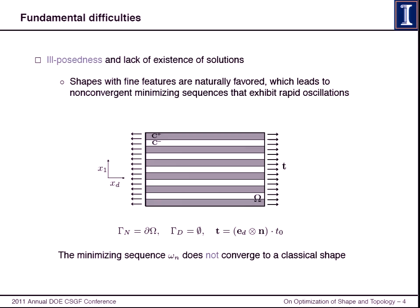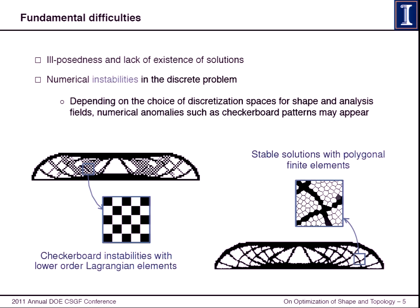One has to ensure existence of solutions. One has to impose some uniform regularity conditions on the admissible shapes. Another issue is that if you discretize this problem, you have essentially two fields. You have one field parametrizing the shape, and then one field parametrizing the boundary value problem. This choice of approximation spaces could sometimes lead to numerical instabilities. In this case, you can see these spurious checkerboard patterns. These are not optimal solutions, but they're a product of the discretization choices. In this case with polygonal discretization, you can see that you get stable solutions.